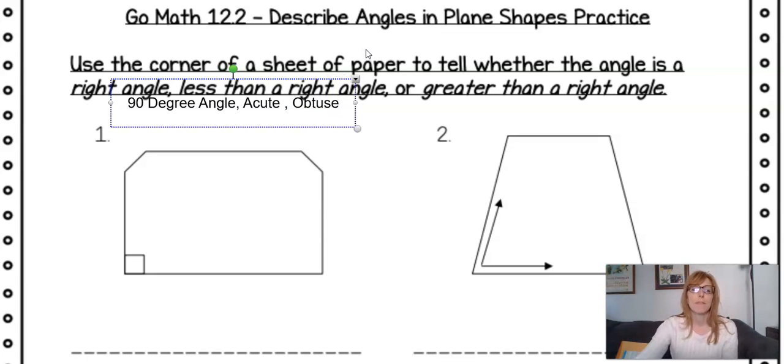So you have a 90 degree angle, which is a right angle. You have a cute little angle, which is less than a right angle. And then you have the obtuse, which is greater.